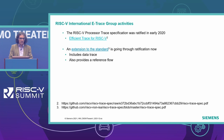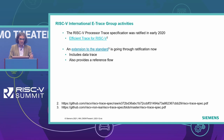Briefly describing the activities within the RISC-V International E-Trace, or Efficient Trace group: the initial processor trace specification was ratified in early 2020. An extension to the standard is going through ratification right now. The main differences from the original 2020 release are that the current release includes data trace and provides a very end-to-end reference flow for people developing systems.